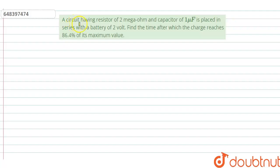Hello everyone, let's start the question. So the question says: a circuit having a resistor of 2 megaohm and capacitor of 1 microfarad is placed in series with a battery of 2 volt. Find the time after which the charge reaches 86.4% of its maximum value.